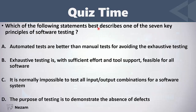Which of the following best describes one of the seven key principles of software testing? Automated tests are better than manual tests for avoiding exhaustive testing — no. Exhaustive testing is feasible for all software with sufficient effort — no, exhaustive testing is impossible. It is normally impossible to test all input-output combinations for a software system — this is correct. The purpose of testing is to demonstrate the absence of defects — this is wrong; we cannot demonstrate the absence of defects, we only detect most defects.